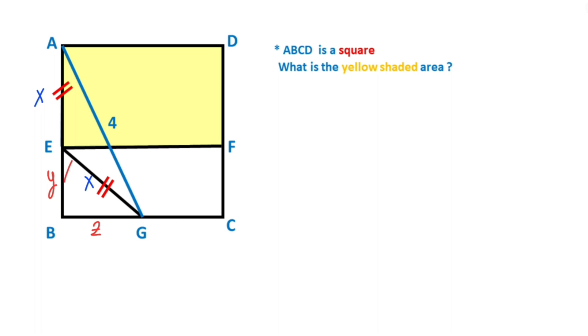If we focus on triangle EBG, we can apply Pythagorean theorem for this triangle. Y squared plus Z squared equals X squared.